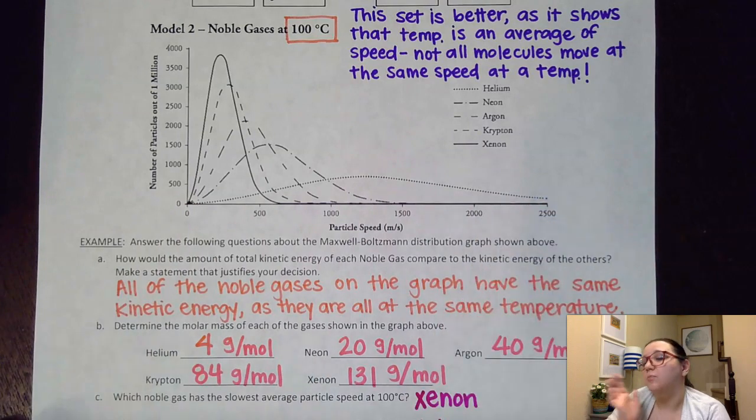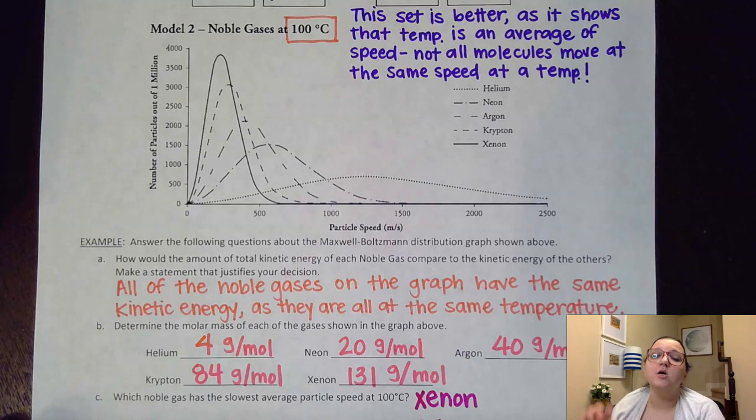However, again, just like on the previous graph, the area underneath these curves should be the same to represent the same number of particles that we have in all of these samples.